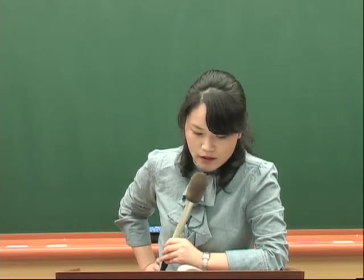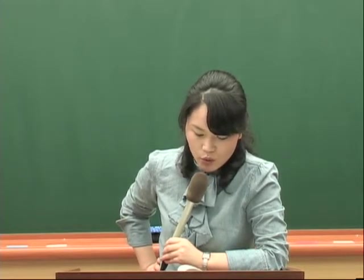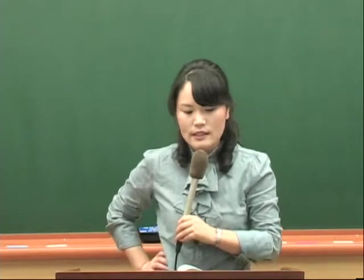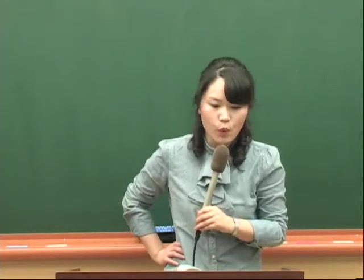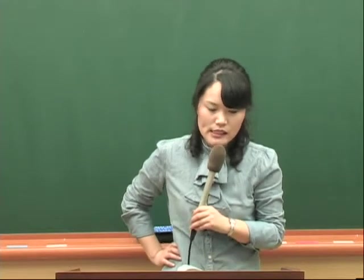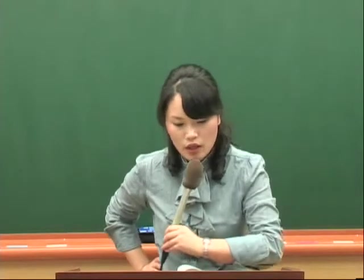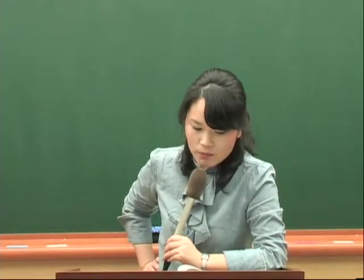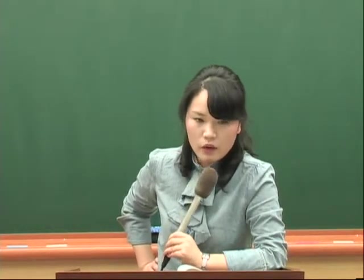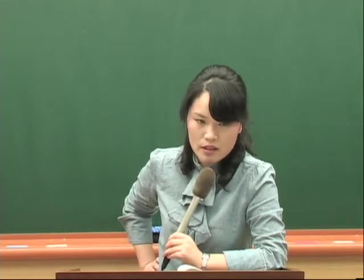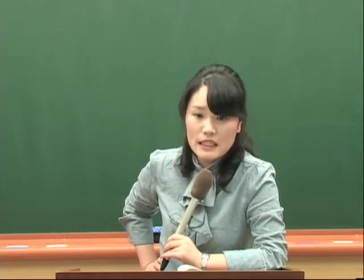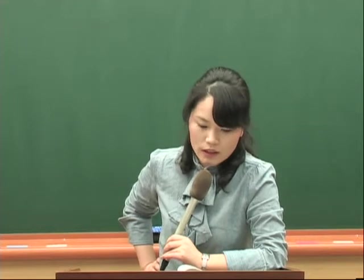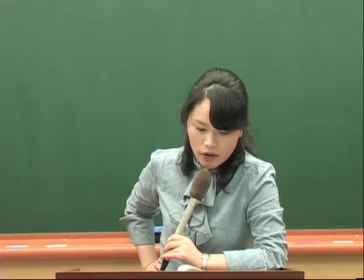122페이지 7번 문제입니다. 'This school seems blank long time ago'라고 나왔죠. 이 학교는 보인다는 뜻인데요. 'seem'은 뒤에 to부정사를 목적어로 취하죠. 1, 2, 4번 중에 고르시면 될텐데, 학교는 'build'가 짓는 것이고, 'be built'는 지어지는 것이에요. 지어지는 것이죠. 사람이 짓는 것이 아니므로 수동이 들어가야 한다는 걸 아실 거에요.